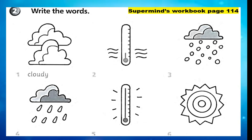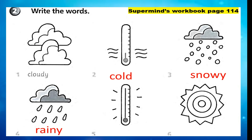Number two is cold — C-O-L-D. Number three, you can see snow in the cloud, so this one is snowy — S-N-O-W-Y. Number four is rainy — R-A-I-N-Y. Number five, the temperature is very high, so it is hot — H-O-T. Number six is sunny — S-U-N-N-Y.